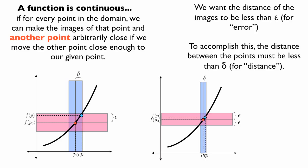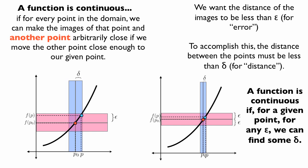So that's the definition of continuous. A function is continuous if for a given point, and for all points in the function, for any epsilon, we can find some delta such that if the distance of the points is less than delta, the distance of the images is going to be less than epsilon.